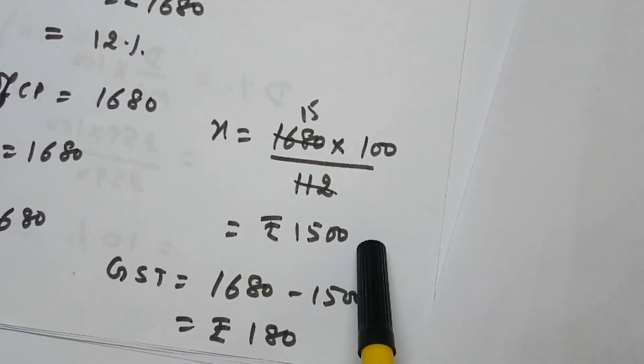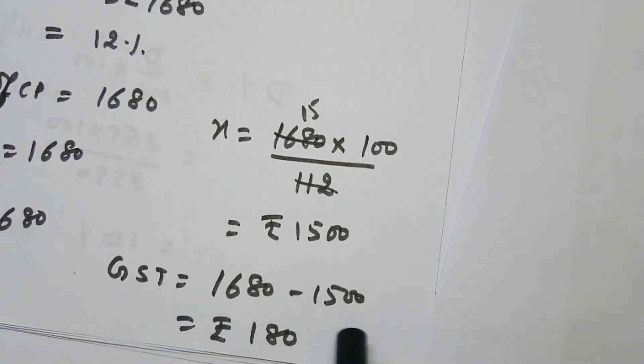So the actual cost price was 1500. He sold it for 1680. So GST paid is 180 rupees.